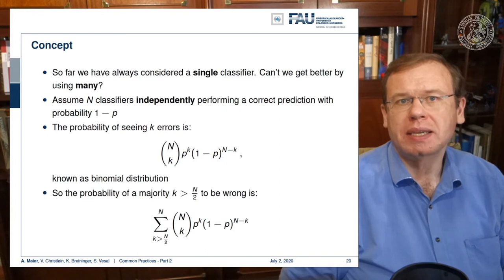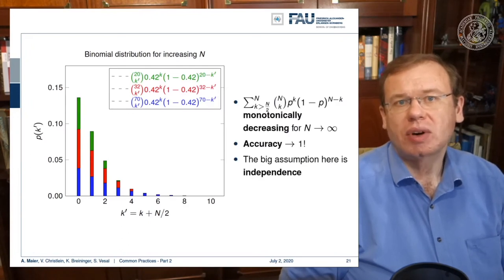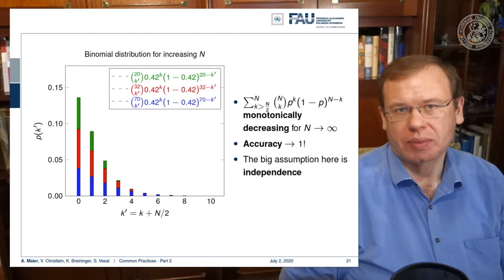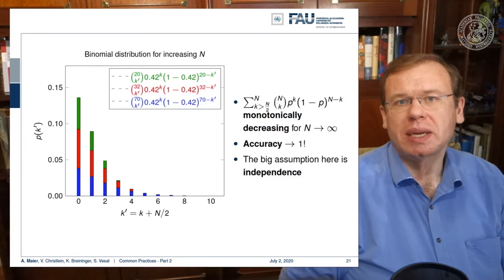We visualize this in the following plot. In this graph, you can see that if I take more of those weak classifiers, we get stronger. Let's set, for example, their probability of being wrong to 0.42. Now we can compute this binomial distribution. Here you can see that if I choose 20, I get a probability of approximately 14% that the majority is wrong. If I choose n equals 32, I get less than 10% probability that the majority is wrong. If I choose 70, in more than 95% of the cases, the majority will be correct. So you see that this probability is monotonically decreasing for large n. If n approaches infinity, then the accuracy will go towards one.